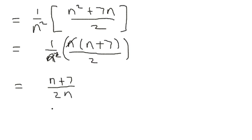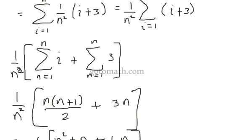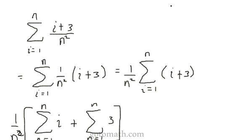So finally, all that stuff was equal to n plus 7 over 2n. Let's go back to the top. So we could say that this is equal to n plus 7 over 2n.